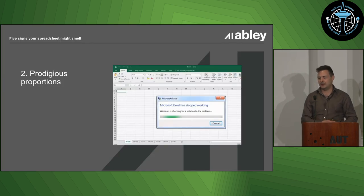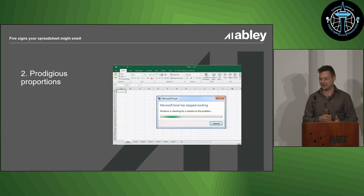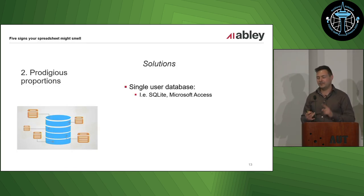Cool. And our next smell is prodigious proportions. So Excel will let you make a sheet with a million rows, 16,000 columns, and as many sheets as your computer's memory can handle. But at some point, you're just going to start hitting limits. It's going to be really hard to open. It's going to keep corrupting the data and stuff like that. Oh, yeah, and if you're trying to share it, it just becomes a nightmare. So the main things to do to get around that, you've got a few different options, but it's essentially, instead of using Excel, just use a database.